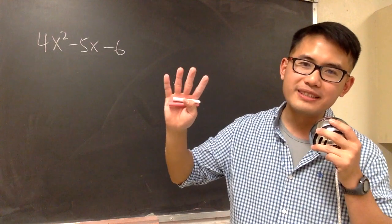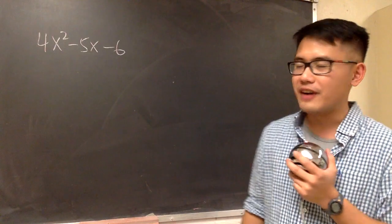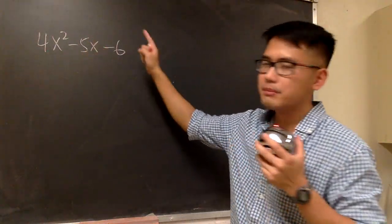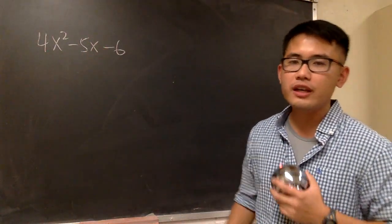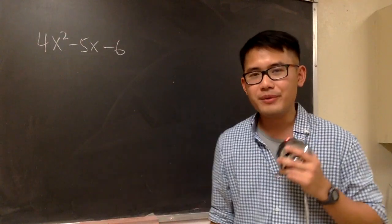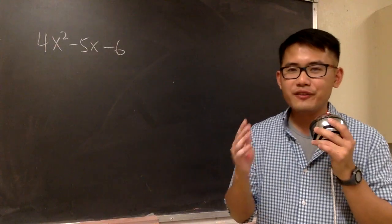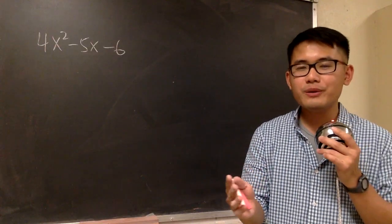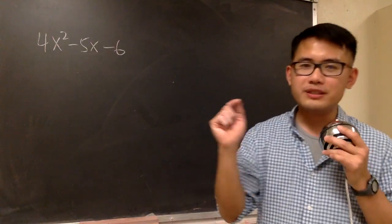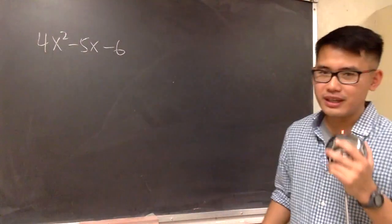I'm going to show you guys 4 methods on how to factor a trinomial. The trinomial I'll be factoring is 4x squared minus 5x minus 6. We'll be factoring the same one with all 4 methods because this is how we can be fair with all the methods. After you finish watching the video, please comment down below and let us know which method you like the most. Now let's look at the first one.